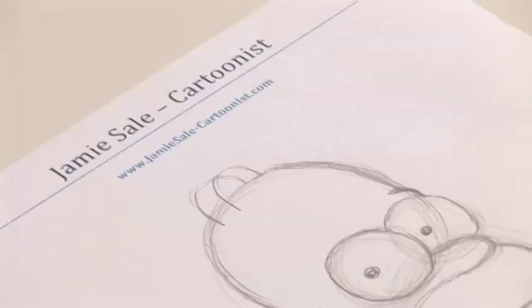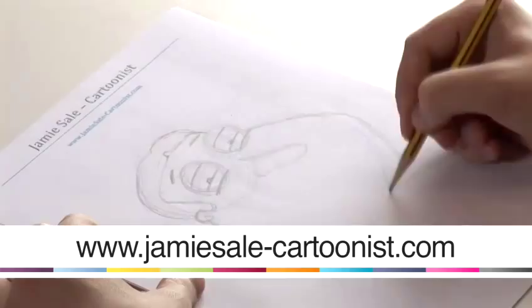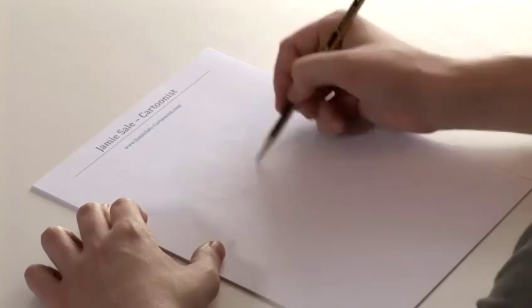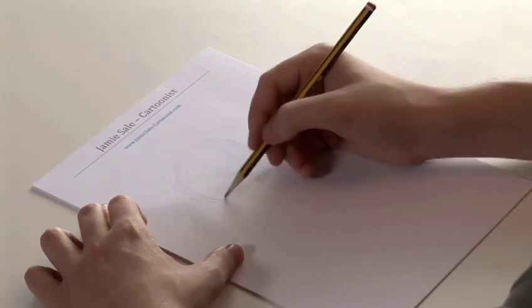Hello, my name is Jamie Sale. I'm a freelance cartoonist from Essex and I'm going to be teaching you how to draw cartoons. This is how you draw Quagmire from Family Guy. All right, there are two parts to his head shape: the upper part of his head and the lower part of his head here, which you just draw in circles for now.